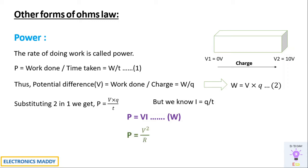We also have other power forms: P equals V squared by R, obtained by substituting I equals V by R from Ohm's law into P equals VI. We also have P equals I squared R, obtained by substituting V equals IR from Ohm's law. All units with respect to power are always in Watt. These are the three fundamental important equations with respect to power.